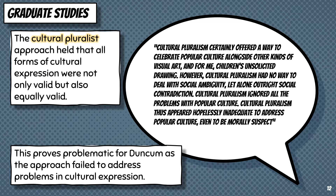The cultural pluralist approach held that all forms of cultural expression were not only valid, but also equally valid. This approach was championed by the field of American popular culture studies, where popular culture was synonymous with American culture and celebrated no matter how many ambiguities or contradictions arose. This proved problematic for Duncan, as the approach failed to address problems in cultural expression. Duncan writes: "Cultural pluralism certainly offered a way to celebrate popular culture alongside other kinds of visual art, and for me, children's unsolicited drawing. However, cultural pluralism had no way to deal with social ambiguity, let alone outright social contradictions. Cultural pluralism ignored all the problems with popular culture and thus appeared hopelessly inadequate to address popular culture, even to be morally suspect."